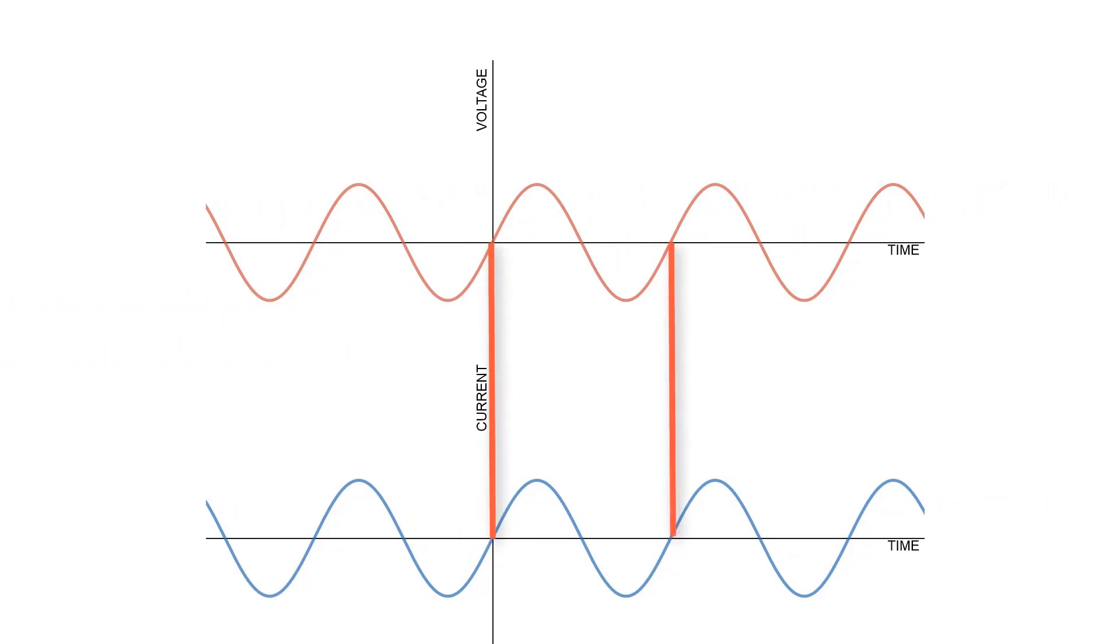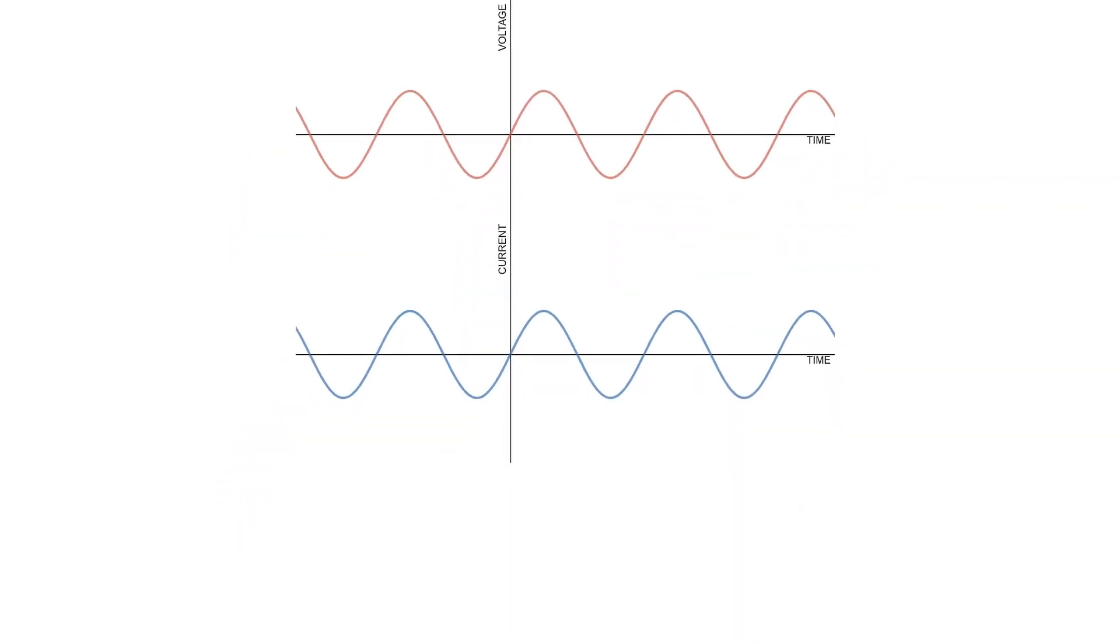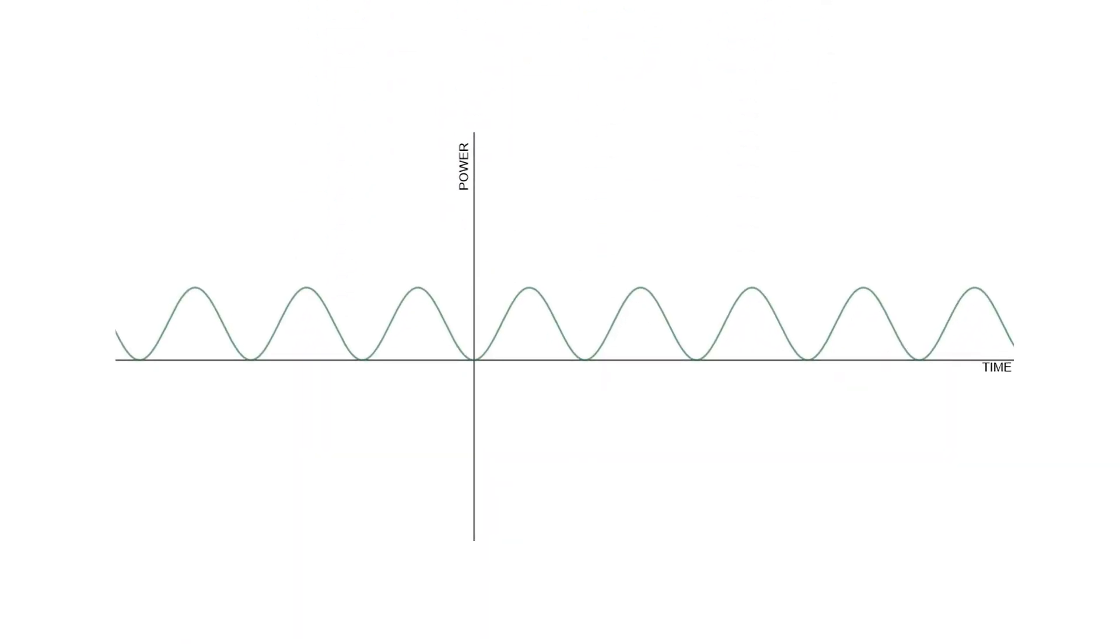To calculate the power, we have to multiply the two waveforms together. In the first half of a period, positive times positive equals a positive value. In the second half of a period, negative times negative equals a positive value, and so on. So power waveform will always be positive.